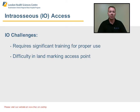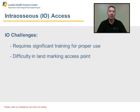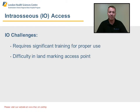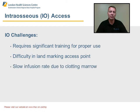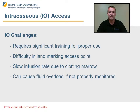Intraosseous access requires a pressure infusion bag. It is a high-pressure type of infusion in that it's not going into a vein — a bone is essentially a non-collapsible vein and we have to push this fluid in. We need to make sure that we are in the medullary sinus where there's blood flow, as opposed to the Haversian canal, so that the medication and fluid gets absorbed properly into the patient. Bone marrow can cause clotting problems with the intraosseous needle. You need to continuously monitor the IO site for signs of infiltration, interstitial fluid into the tissues, as well as fluid overload.